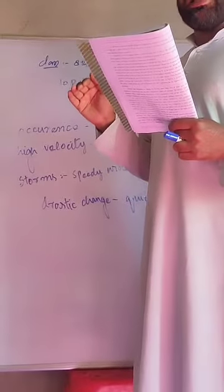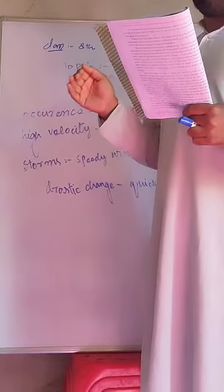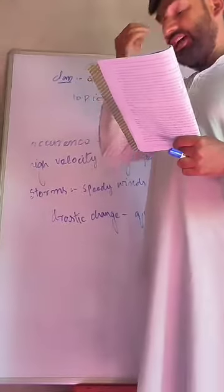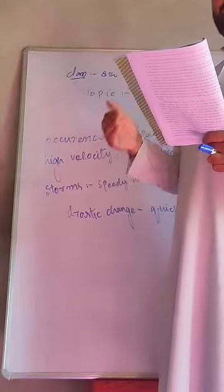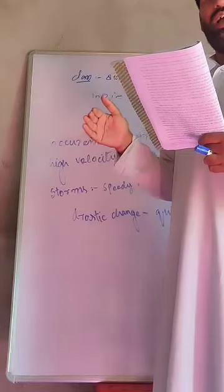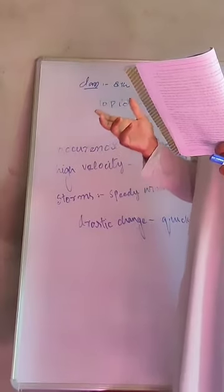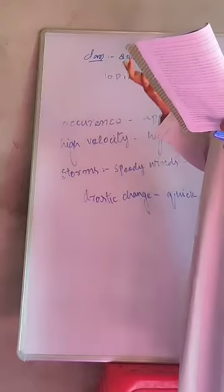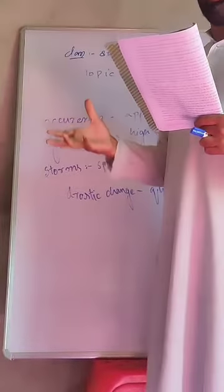Why has the Earth's average surface temperature been increased? Because of the activities of human beings. Man has done deforestation — he cut down the trees and used fossil fuels. When he burned the fossil fuels, the greenhouse gases increased. The level of carbon dioxide in the atmosphere has been increased.